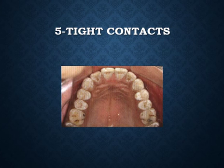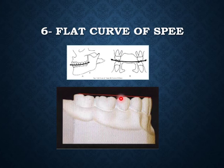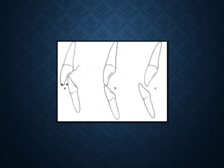Key number five: there should be no spaces, and there should be tight contact between the teeth. Key number six: there should be a flat curve of Spee, flat or slightly curved but not deeper than 1.5 mm at the region of the second premolar.